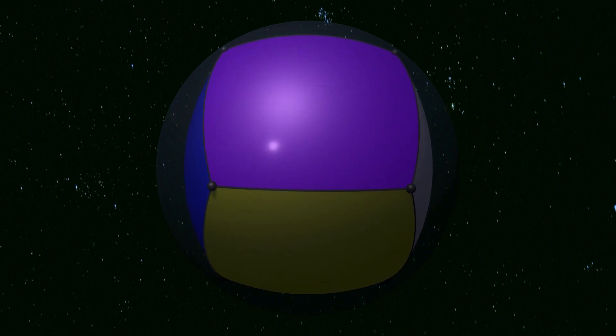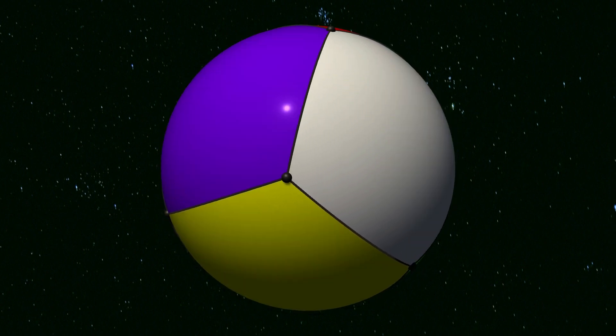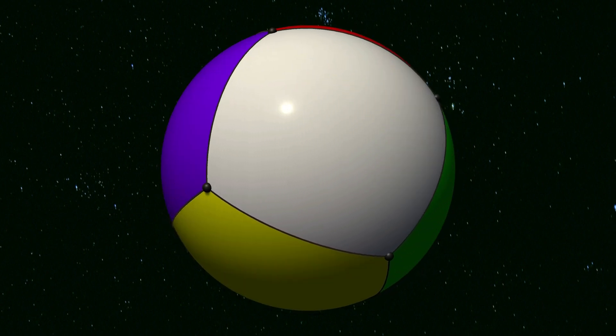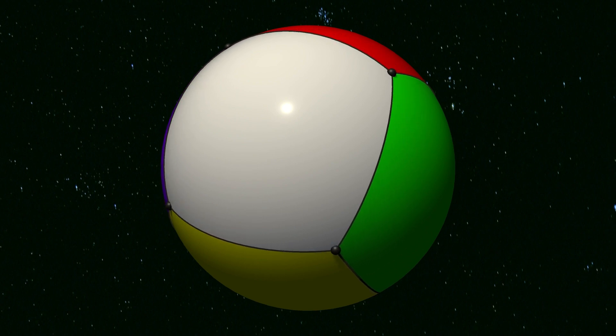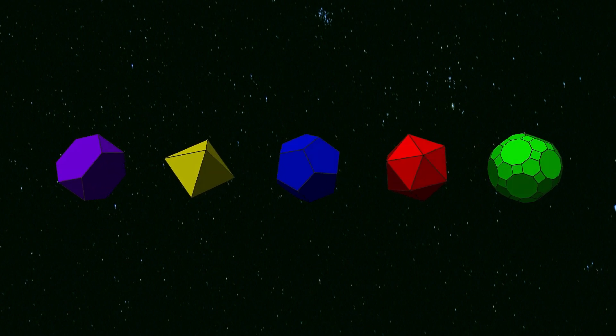The edges become spherical arcs, and the faces become curved. Any polyhedron can be viewed as a spherical polyhedron.